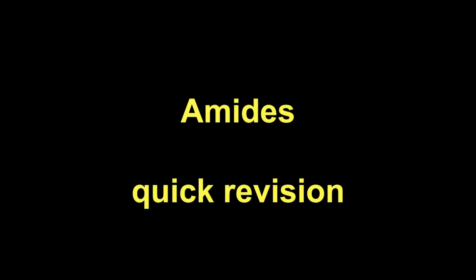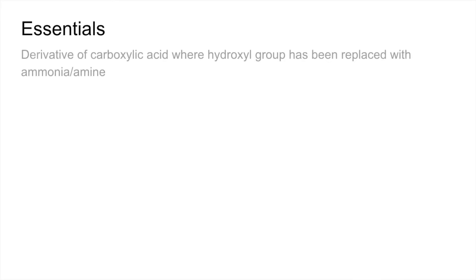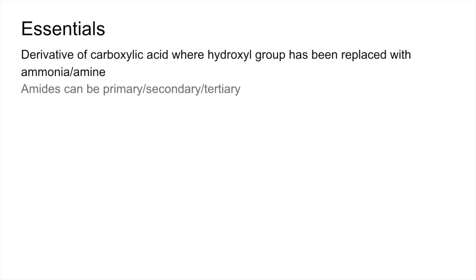Quick revision video on amides. We'll start with the essentials: amides are derivatives of carboxylic acids where the hydroxyl group, the OH group, has been replaced with ammonia or an amine. Amides can be primary, secondary, or tertiary, so we'll have a quick look at that now.